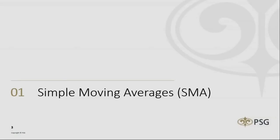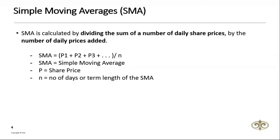The simplest form of moving average is probably known as the simple moving average. It's calculated by taking the arithmetic mean of a given set of values. The set of prices are added together and then divided by the number of prices in that set. The SMA is calculated by dividing the sum of daily prices by the number of daily prices added. The formula is: SMA = (P1 + P2 + P3 ... ) / N, where P is the share price on each day and N stands for the number of days or the term length of the SMA.